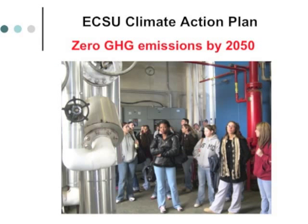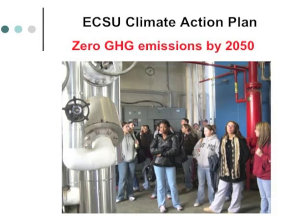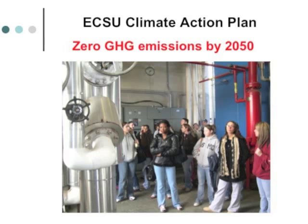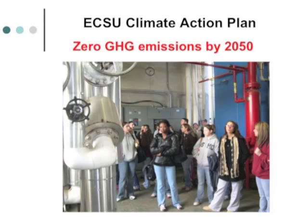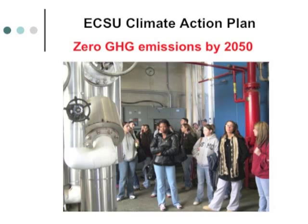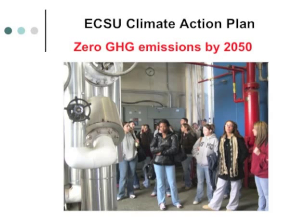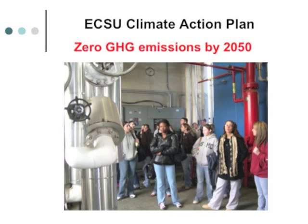Eastern itself has signed up, as many other colleges and universities have done, to a goal of mitigating climate change. The goal Eastern has set for itself is to have zero greenhouse gas emissions by 2050. Now 2050 is a long way away, but Eastern is tracking its emissions produced by university activities every year. So this is one way to mitigate climate change by reducing CO2 and other greenhouse gas emissions.